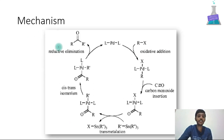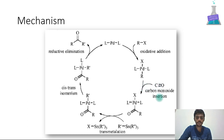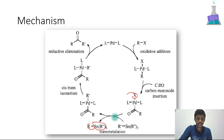This is the mechanism of Stille carbonylative coupling. The palladium(0) complex is present. The first step — oxidative addition — is similar to Stille coupling: the two ligands are in trans position, X is the leaving group, and R is the alkyl group added in trans position. After that, carbon monoxide insertion occurs where C=O is inserted. Next is transmetallation, where the tin group and the leaving group are eliminated and R' is added. Then cis-trans isomerization brings the two trans ligands to cis position, followed by reductive elimination.